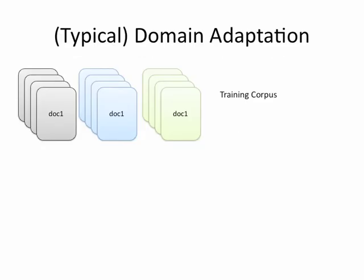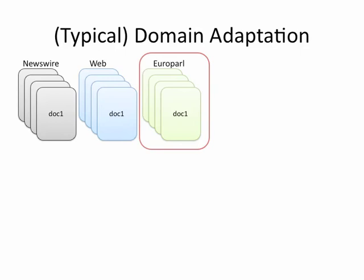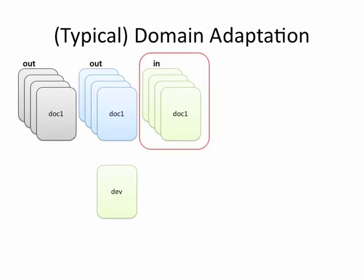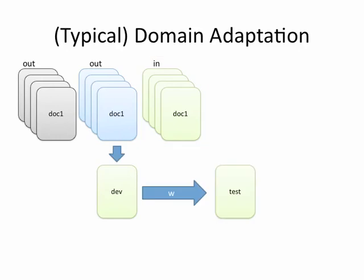So typically what happens in a domain adaptation system is you have a training corpus that's built out of a number of domains — Newswire, Web, Europarl — and when a document comes in that you want to have translated, you figure out which of those domains does the best job of translating it, and you build a system out of that.